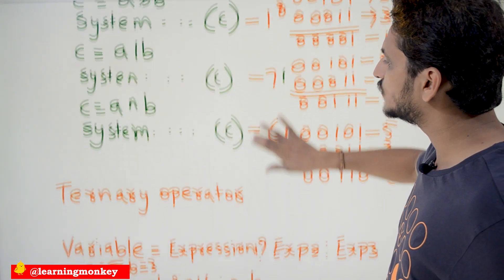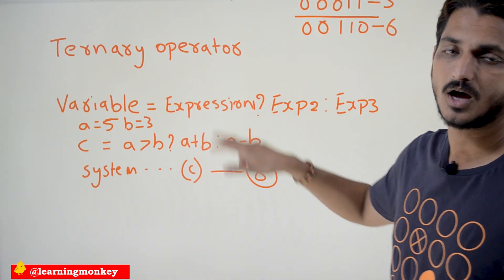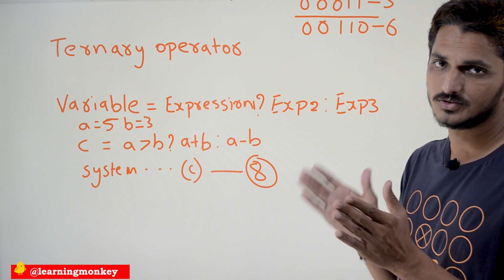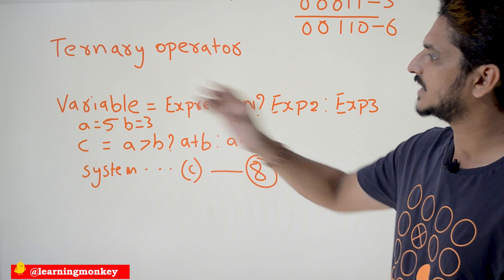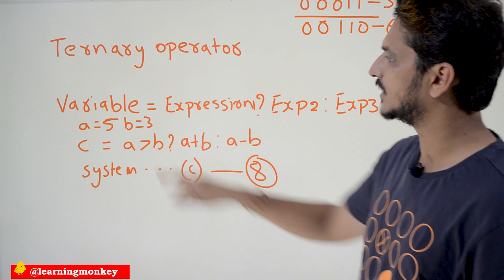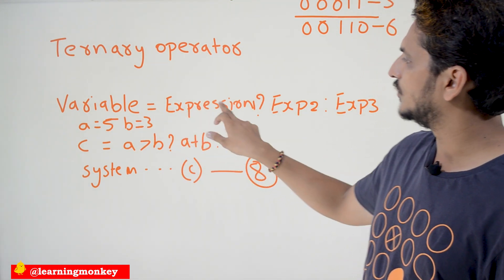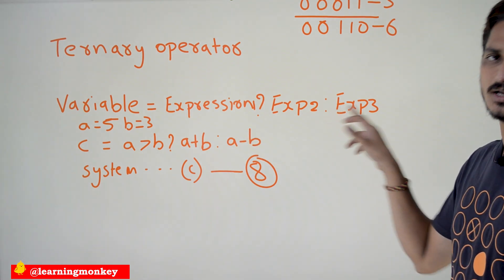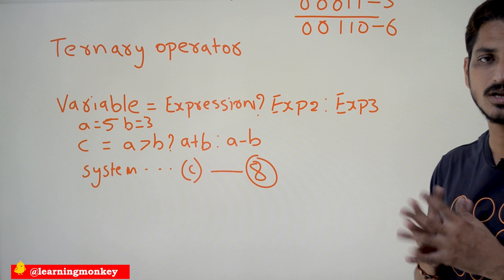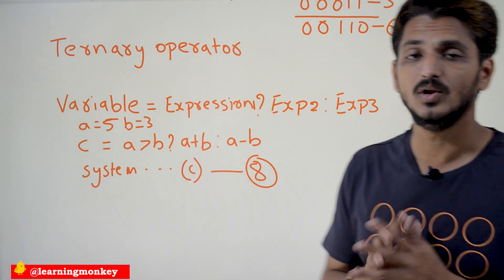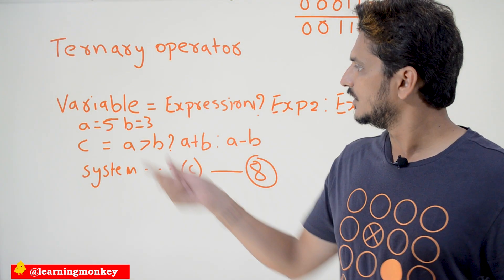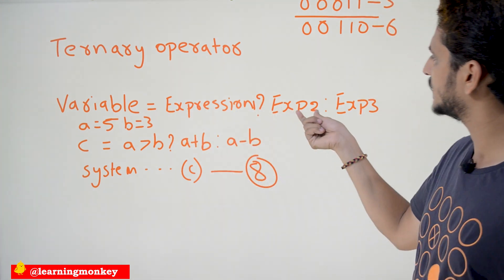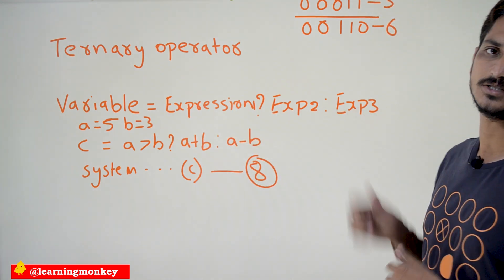Now coming to the ternary operator. The syntax is: variable = expression1 ? expression2 : expression3. The first expression is a condition; if it is true, expression2 is executed and assigned to the variable. Otherwise, expression3 is executed and assigned to the variable.